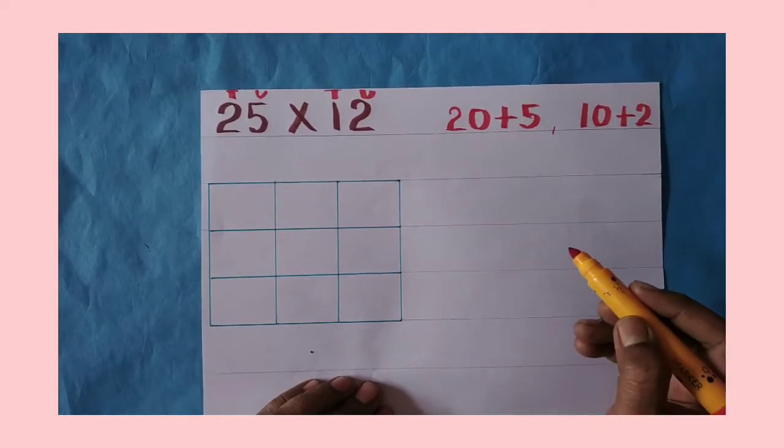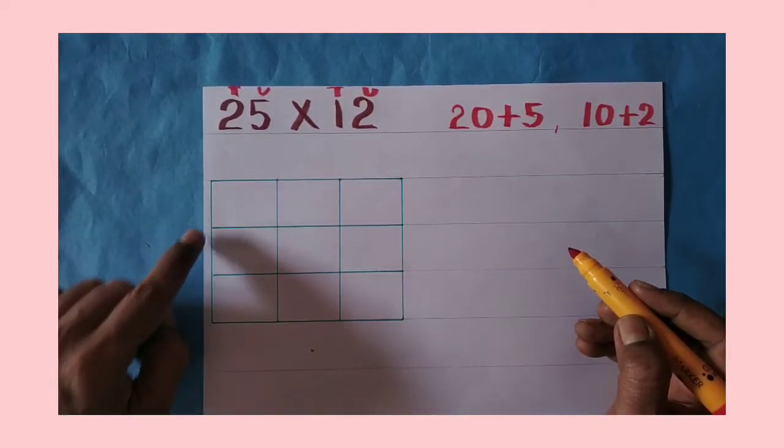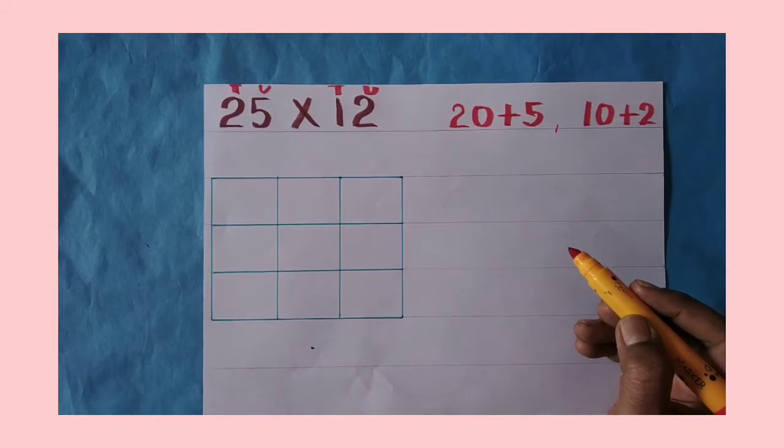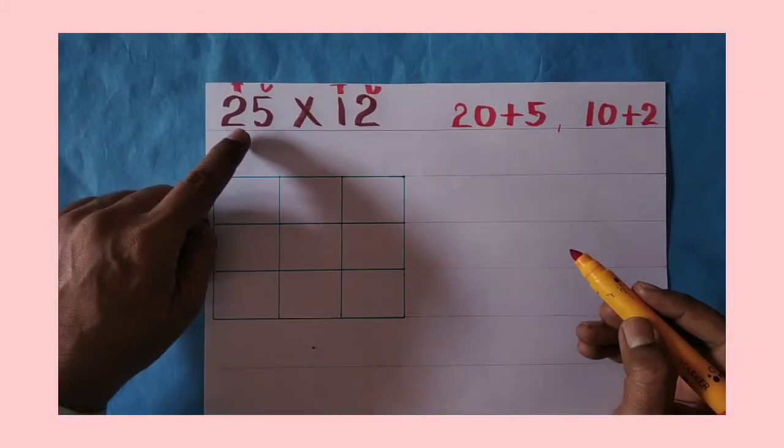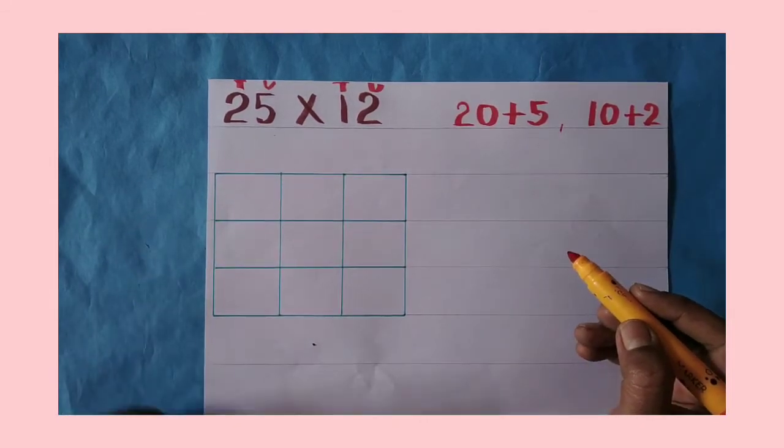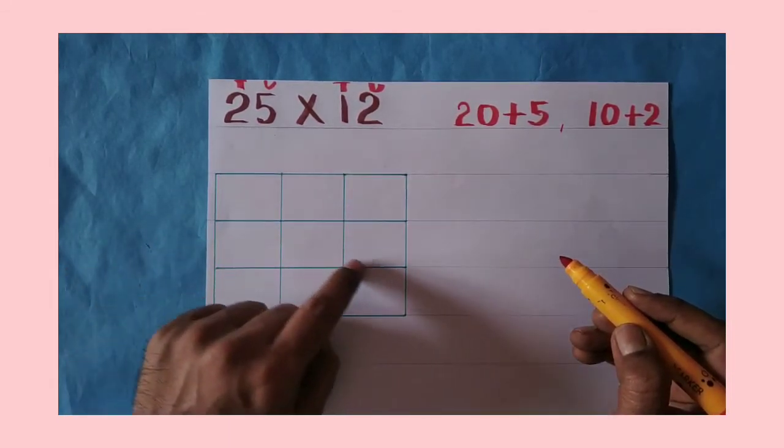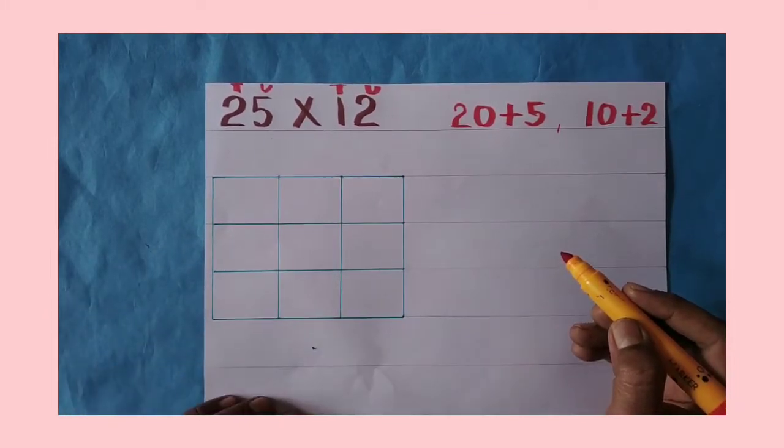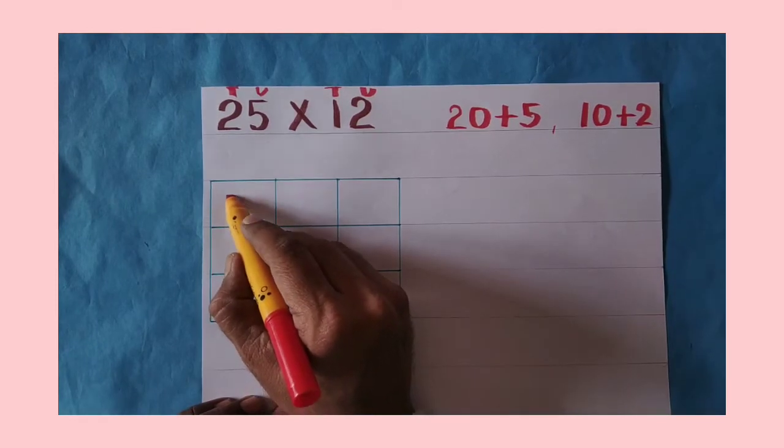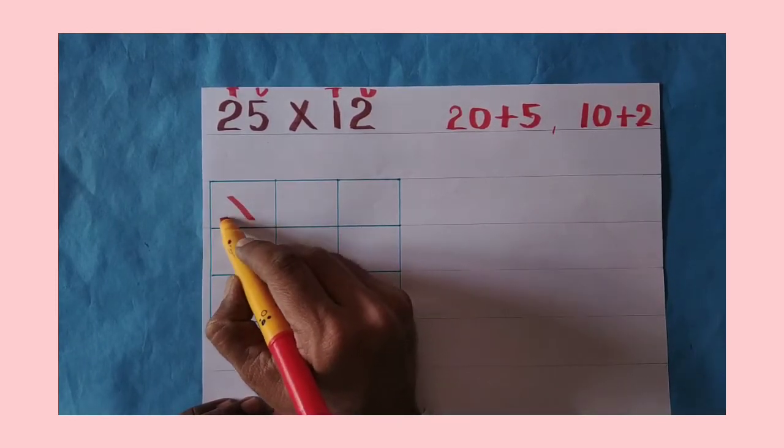After that, you have to arrange the table. The table is in the lattice method. If you have to multiply two-digit number by two-digit number, then you have to draw three rows and three columns. First, what do we need to do? We need to write the multiplication sign.